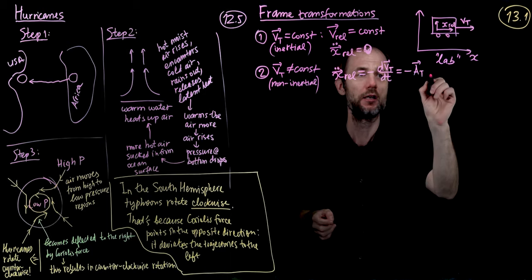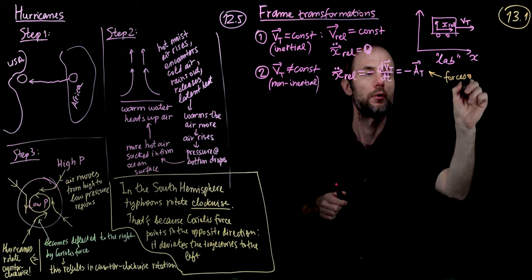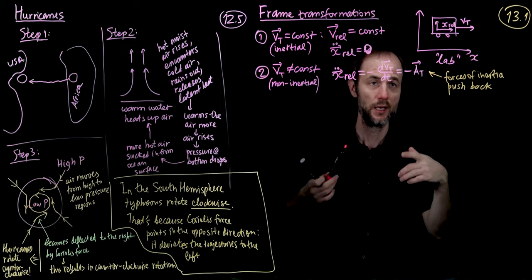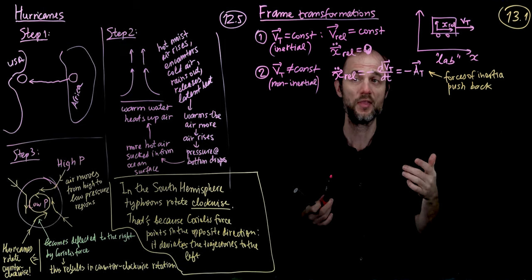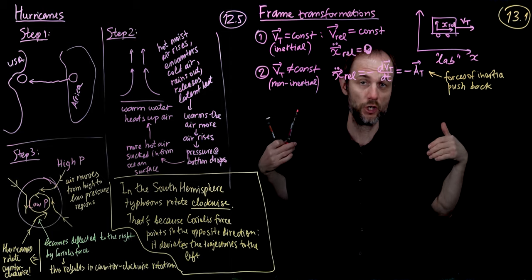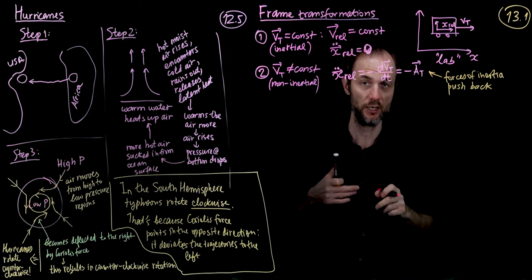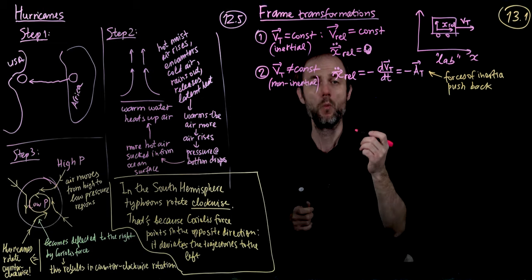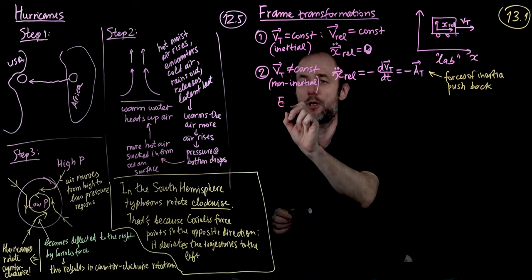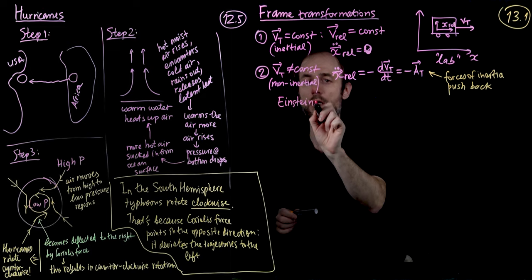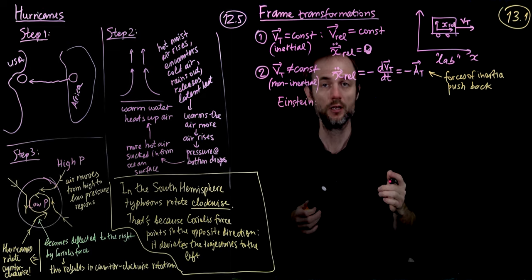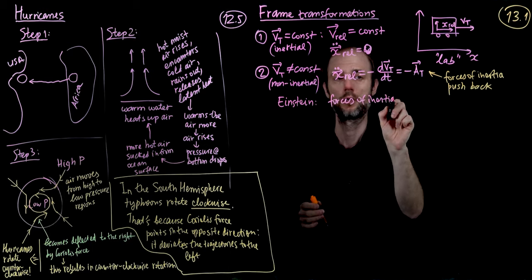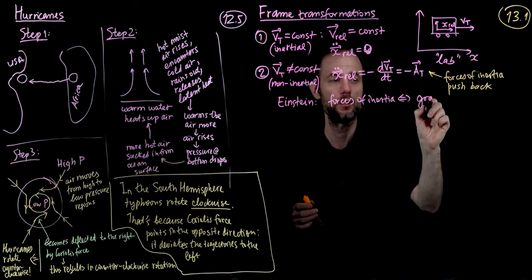The acceleration of a point mass in a frame that accelerates at acceleration at is minus at. Forces of inertia push back: if our train is decelerating, at is negative, and the force of inertia pushes you forward — hence the negative sign. We also discussed the correspondence, first revealed by Einstein, between forces of inertia and gravity. He postulated that forces of inertia behave exactly the same way as gravity and would be indistinguishable from it.